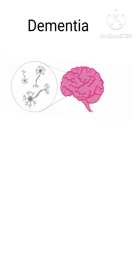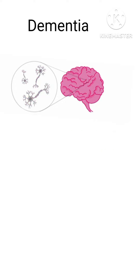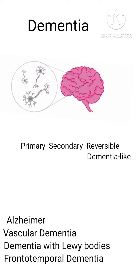Dementia is a result of changes in the brain, which leads to the type of dementia a person can develop. Dementia is divided into three groups in which we have different types of dementia. These groups are namely primary, secondary, and reversible dementia-like.